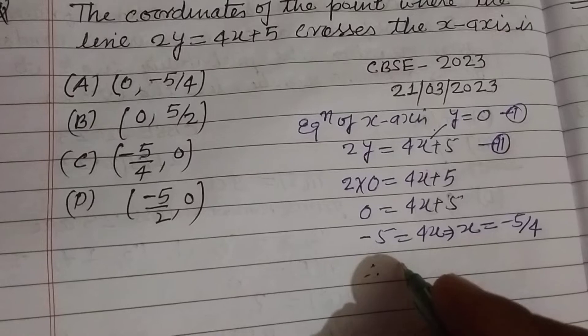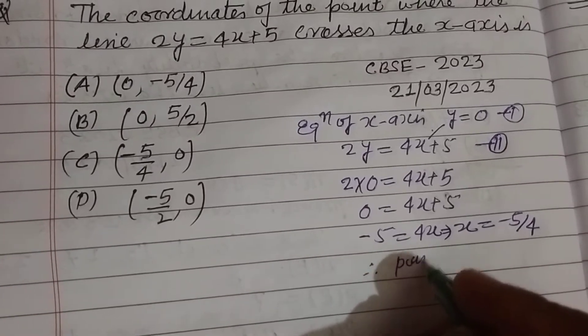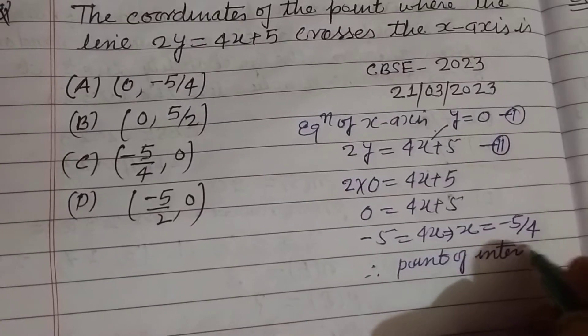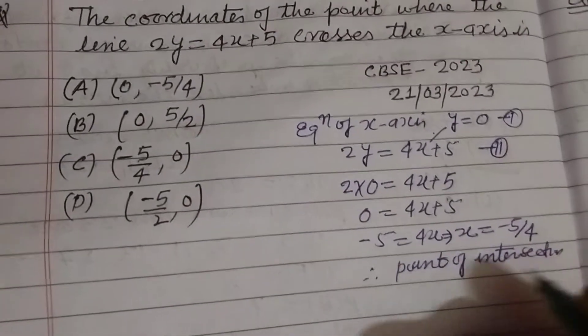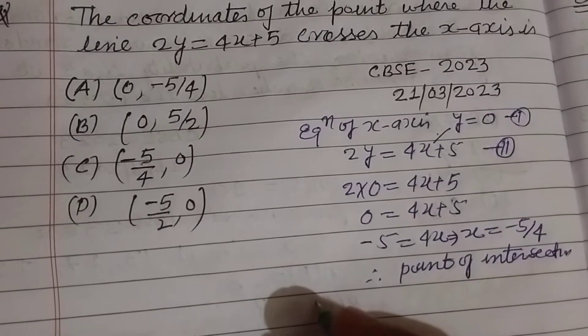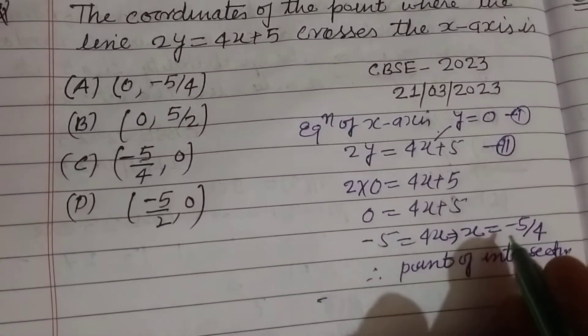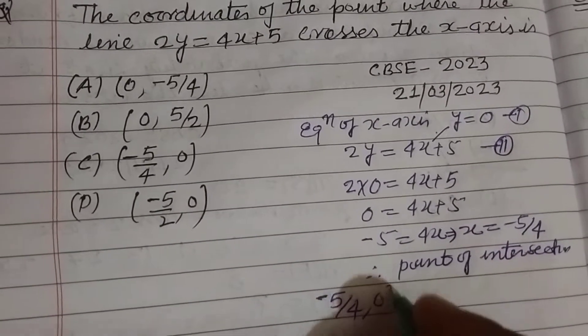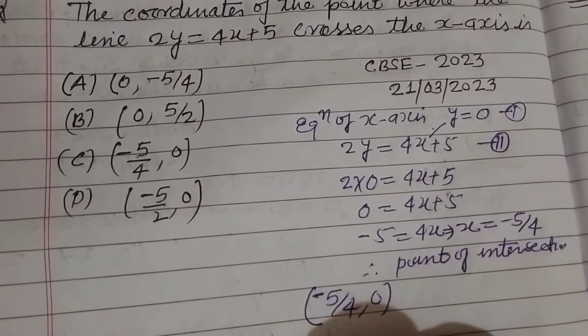Therefore, the point of intersection of the line and x-axis is where y equals 0 and x equals minus 5 by 4. So the coordinate is minus 5 by 4 comma 0. This is the point of intersection.